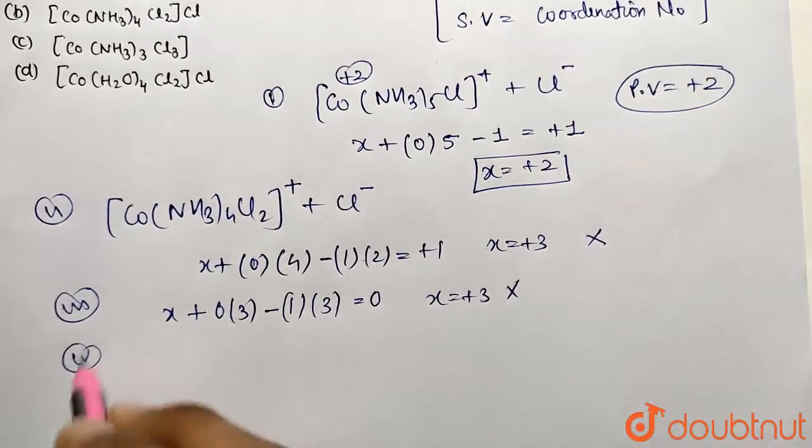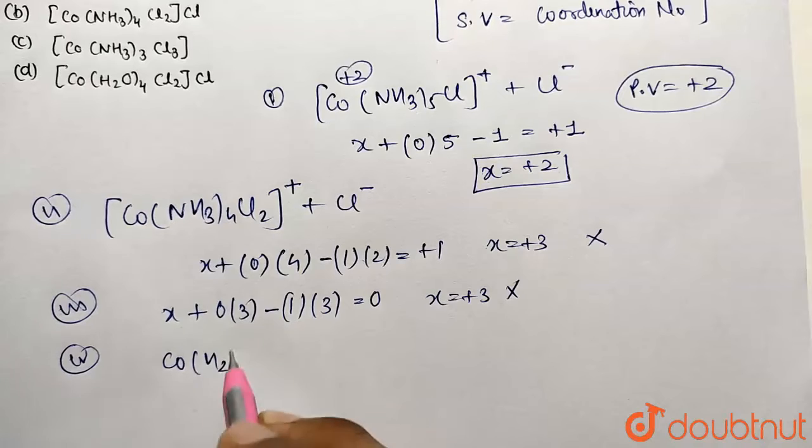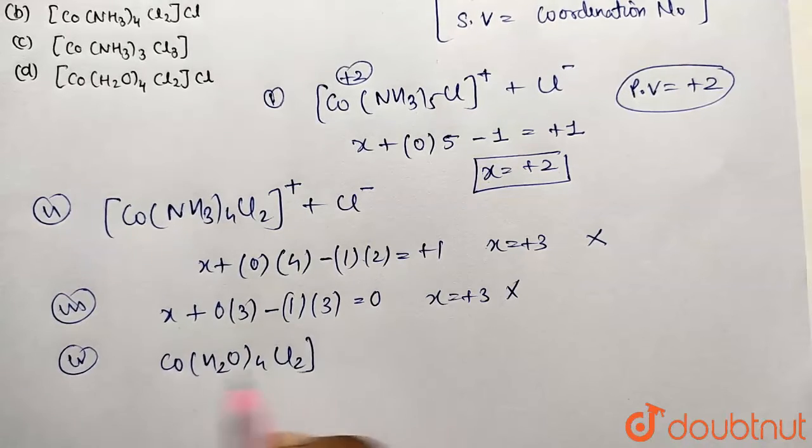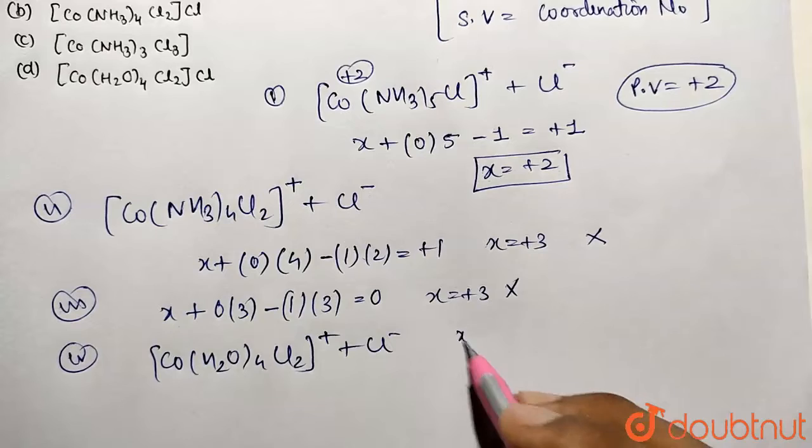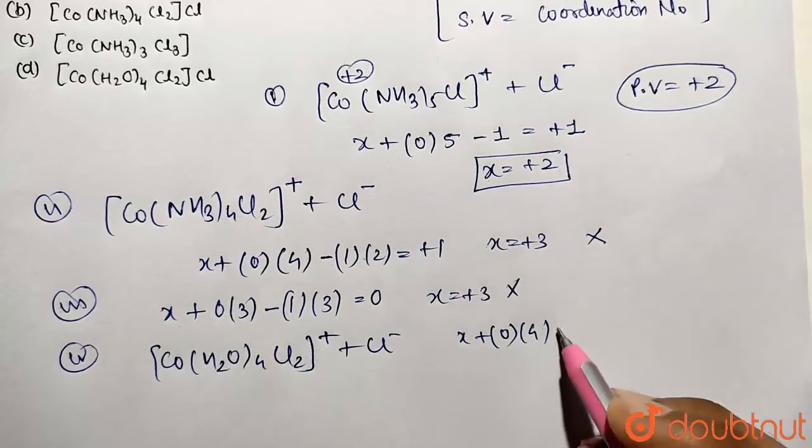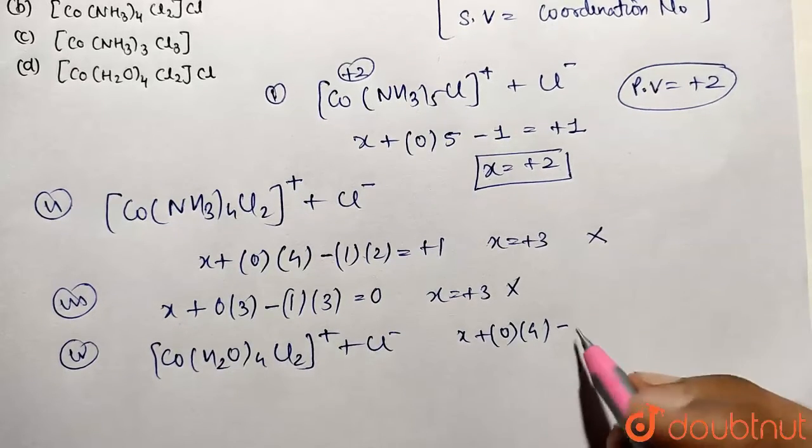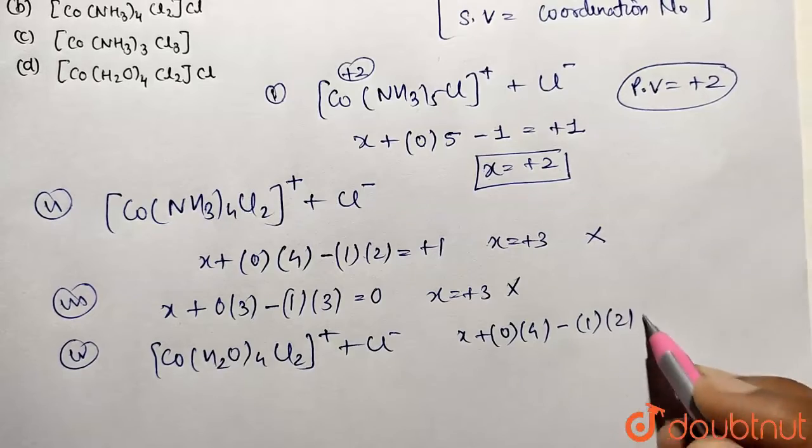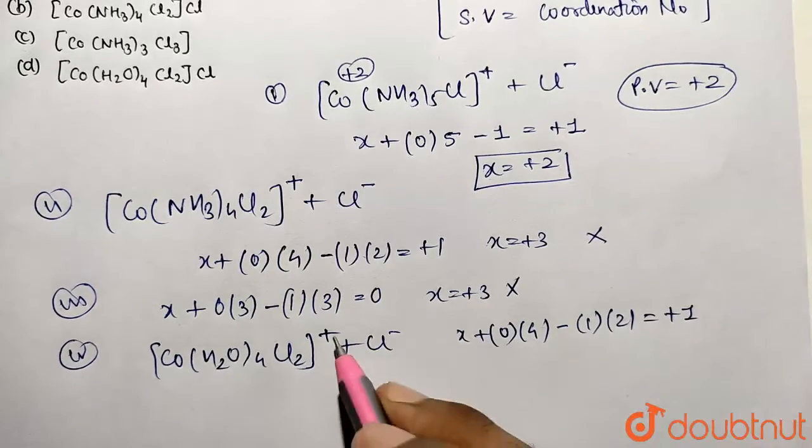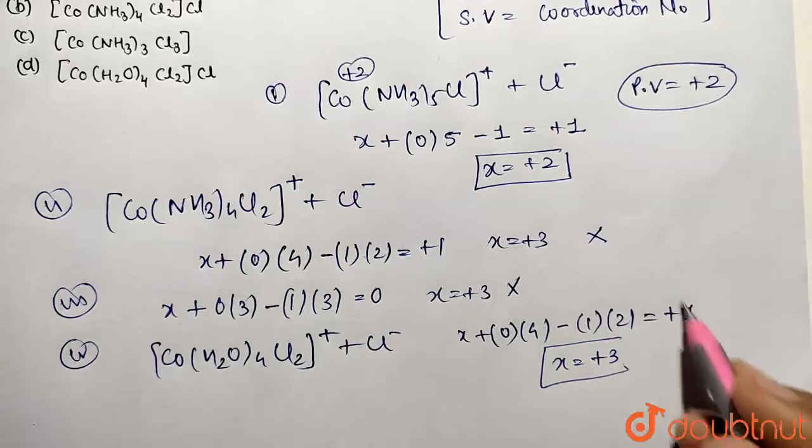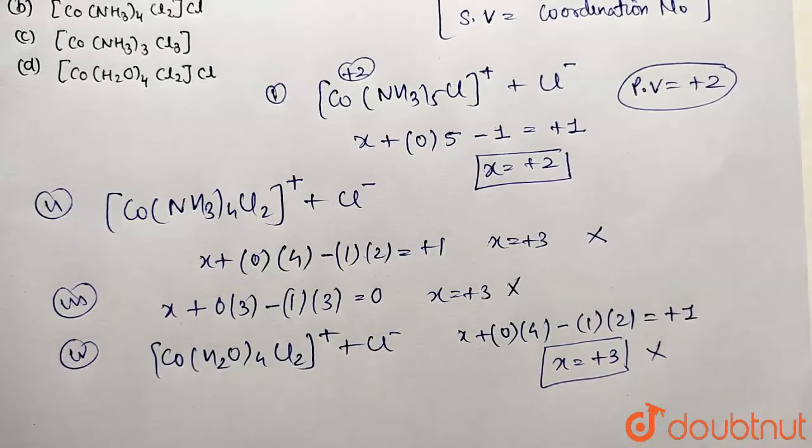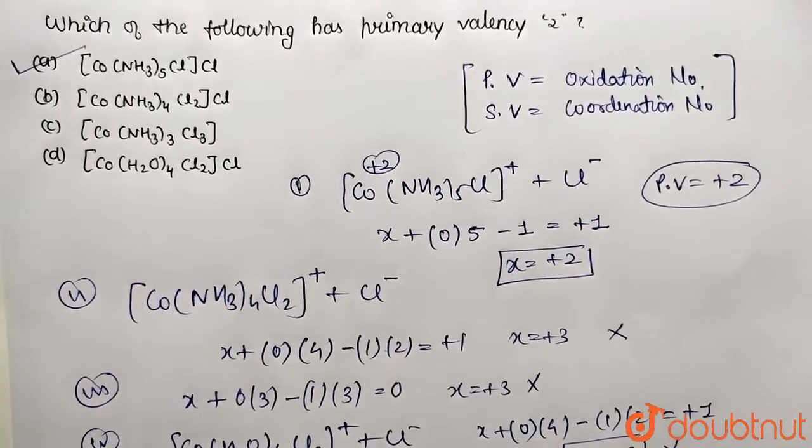Similarly, you can go with the fourth one also. So [Co(H2O)4Cl2] and ionizing it will give Cl minus. So you can go X, aqua is neutral ligand, so 0 multiplied by 4. This is going to be minus 1 multiplied by 2 and will be positive 1 on the coordination charge. So this value also turns out to be positive 3, minus 2 go that side. So it is also not our answer. So option A is the correct choice which we have already discussed.